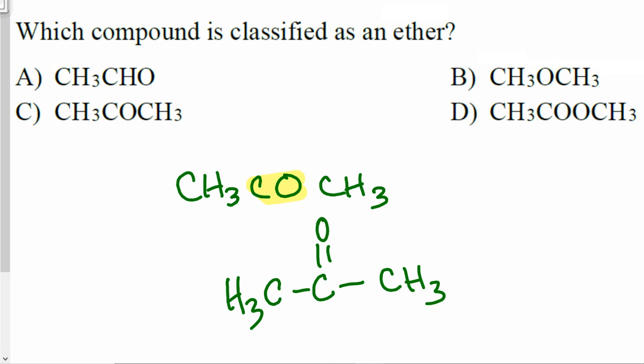Option C is actually not an ether, even though it looks like one. It is actually a ketone, where you have two carbon groups on both sides of the central carbon, which is attached with an oxygen via a double bond.